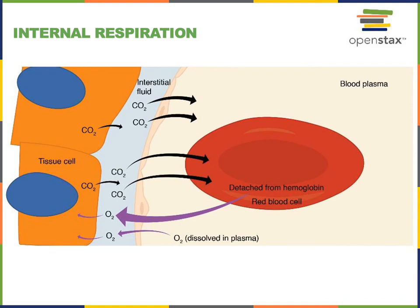Internal respiration refers to gas exchange between the blood within the systemic capillaries and the interstitial fluid of tissues throughout the body. As cells throughout the body use oxygen for aerobic cellular respiration, the partial pressure of oxygen in the interstitial fluid decreases. As these cells produce ATP from aerobic cellular respiration, they also produce the metabolic waste product carbon dioxide, so the carbon dioxide concentration and partial pressure in the interstitial fluid increases.